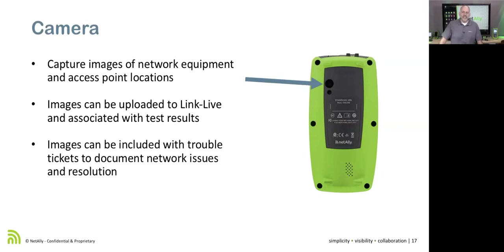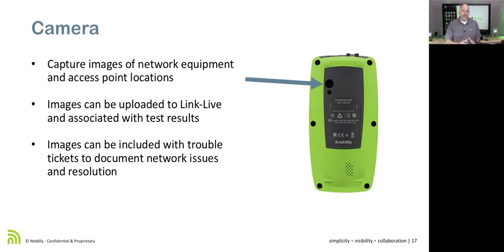There's also a camera. When troubleshooting, we can use it to document what's going on — for example, photographing a wireless access point in a hard-to-reach location. With LinkLive, you can take a picture with the tool and attach it to a test result. In validation mode, use it to document your network; in troubleshooting mode, tie a trouble ticket number to a test result and include a photo so all that information is tied together.